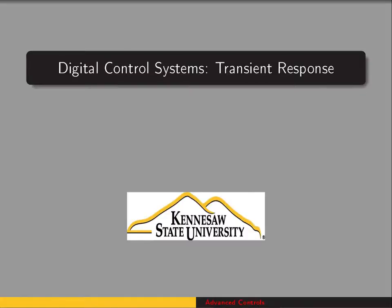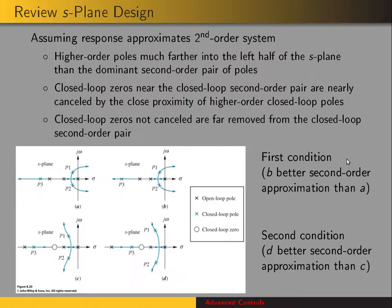We're going to look at the transient response for digital control systems. We'll start by reviewing what we know about transient response for continuous systems. Whenever we're designing a compensator or controller for a continuous system, we use the root locus. And if we have systems of order greater than 2, we see if we can approximate a second-order system, using what we know about how the second-order poles relate to settling time, peak time, and percent overshoot.